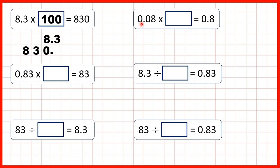Next we have 0.08, and our answer is 0.8. We write out the number and then write 0.8 directly below with the decimal points lined up. Here we can see that the digits have moved one square to the left, so the number has been multiplied by 10, because 10 has one zero so digits move one square.